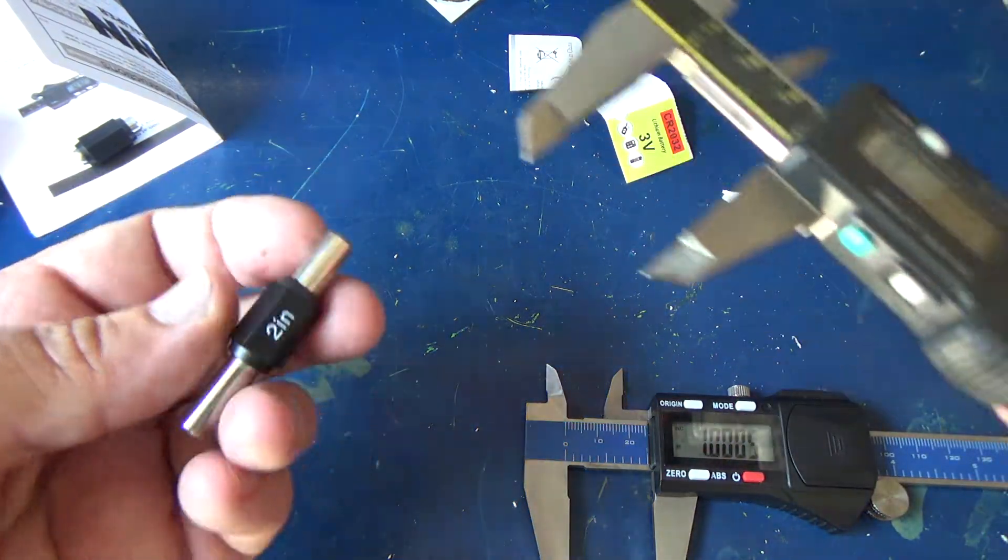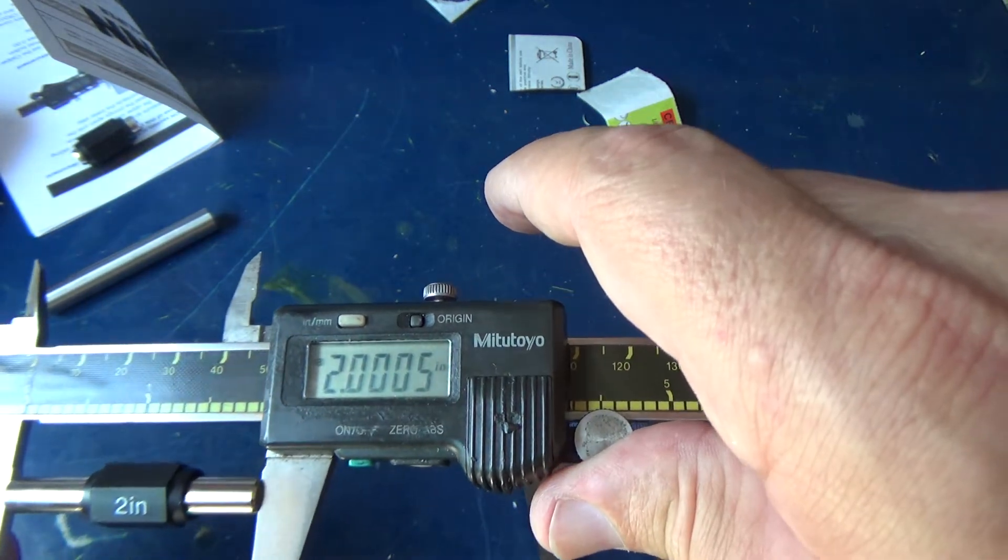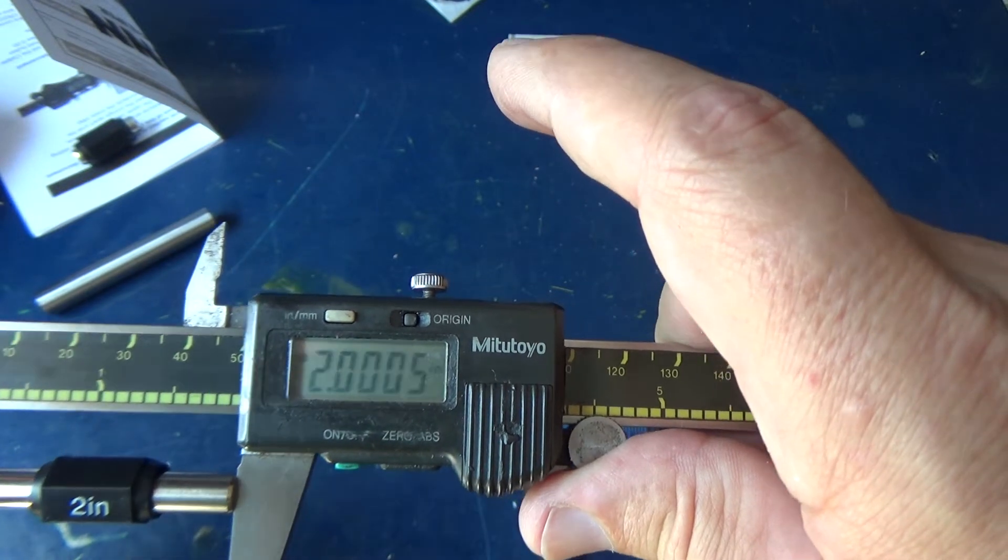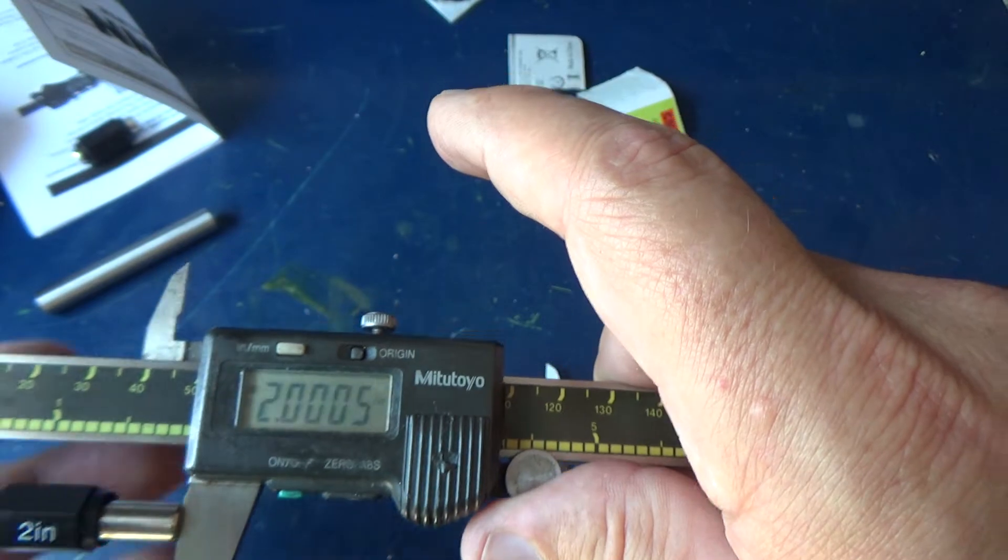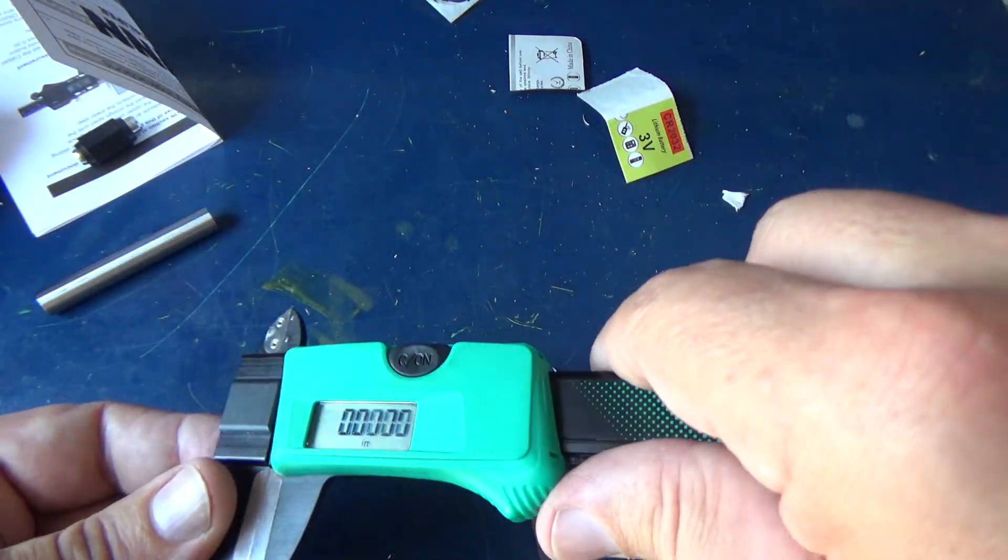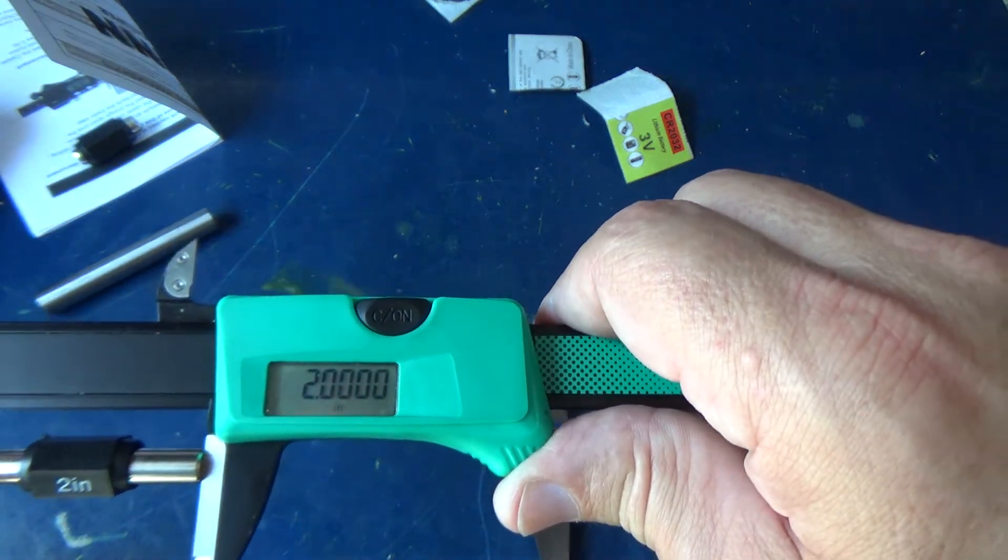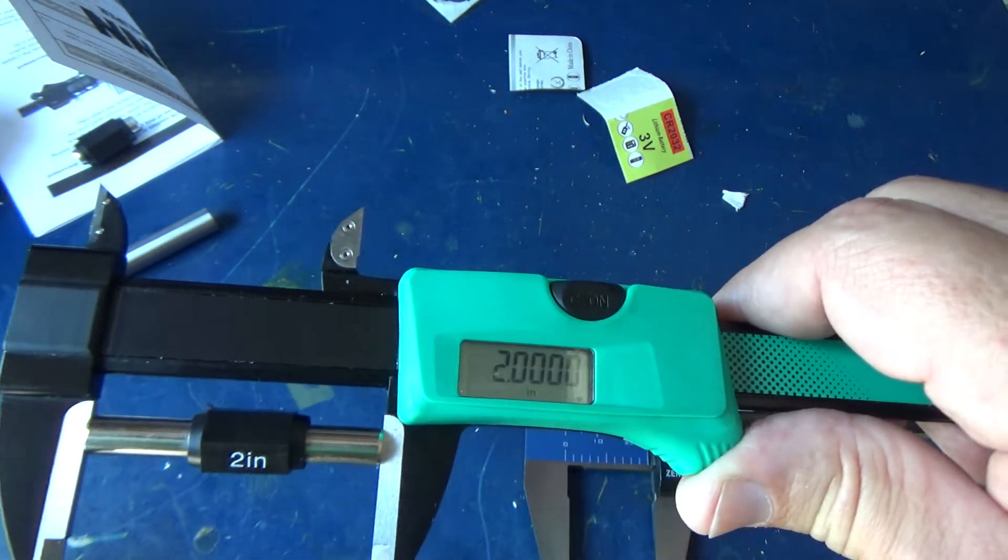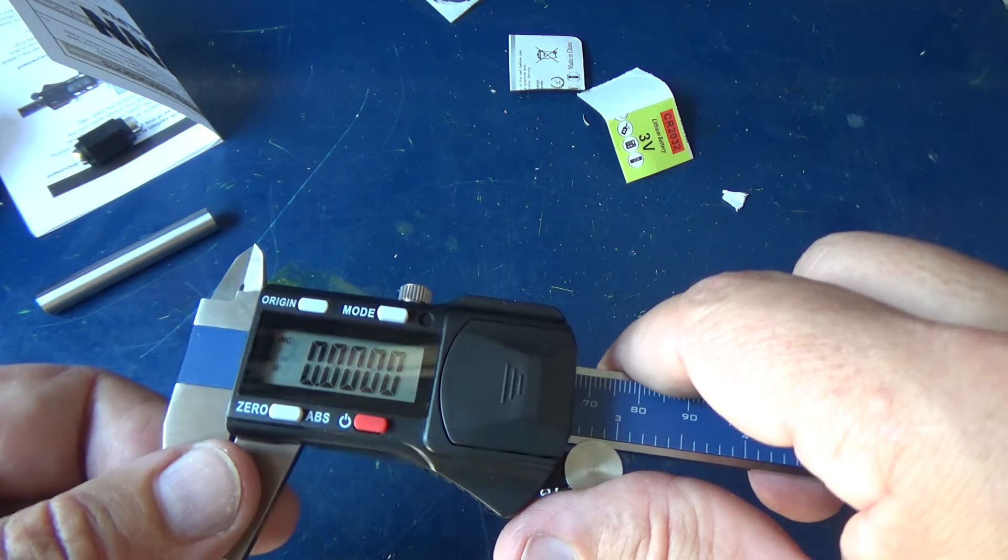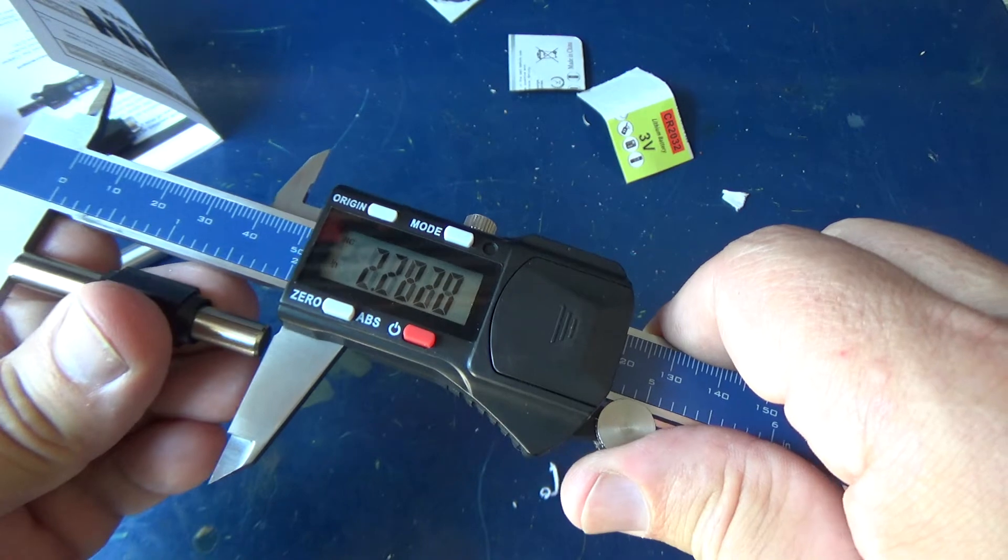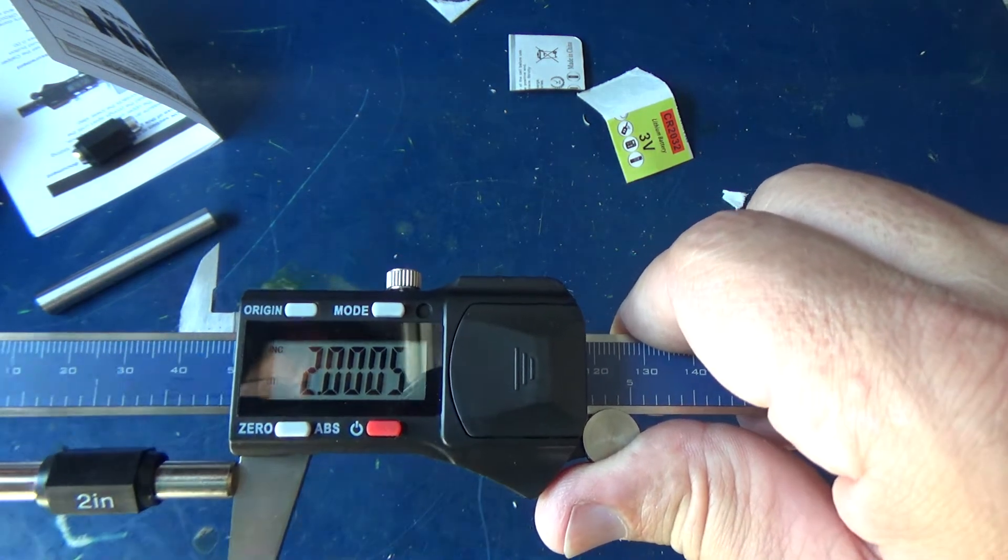Okay, let's check the two inch. First we'll do the Mitutoyos. Hopefully you can see that - that's two inches on the money, that's half of ten thousandths. This goes over four digits on the Mitutoyos. We're still zeroed on the Brown and Sharp. Two inches on the money on the Brown and Sharp. And there's two inches on the Quinns.